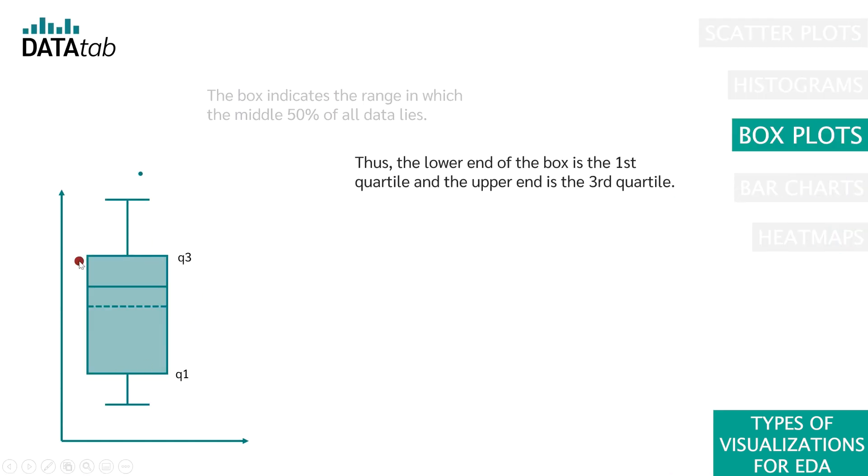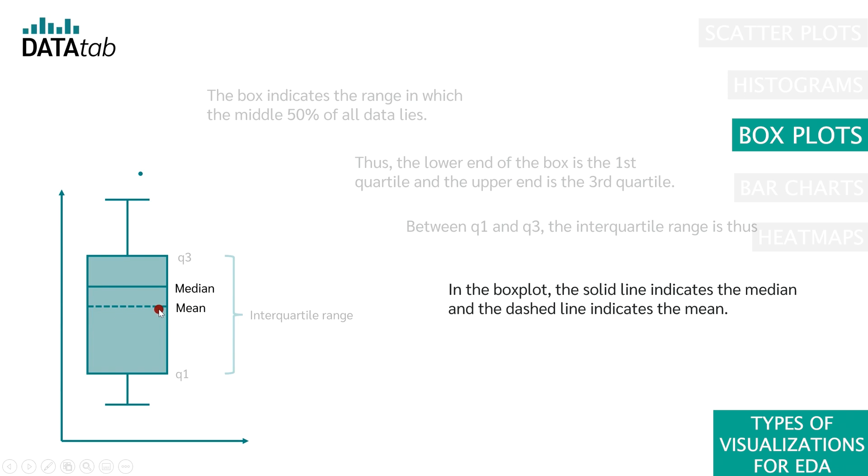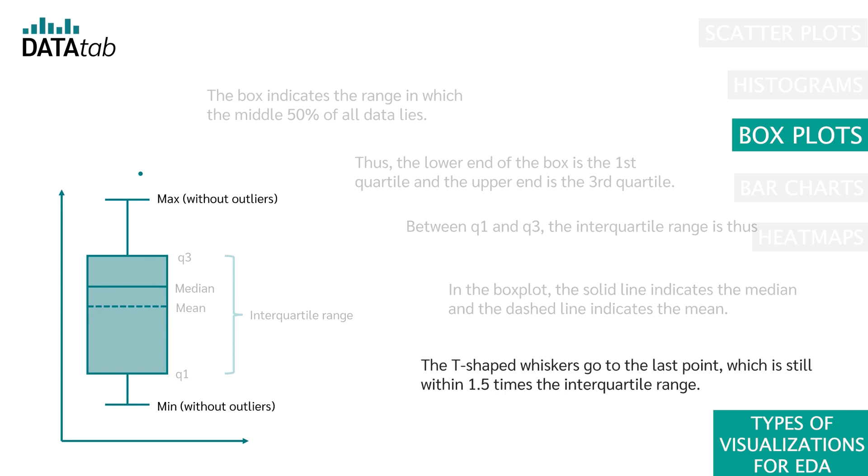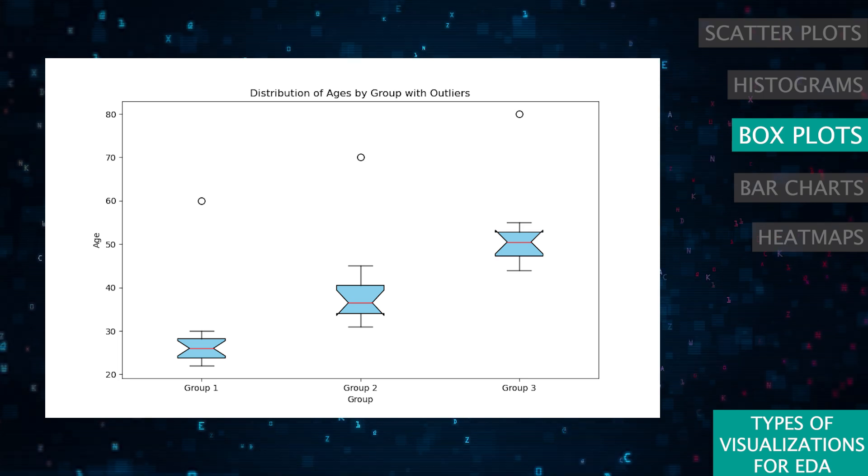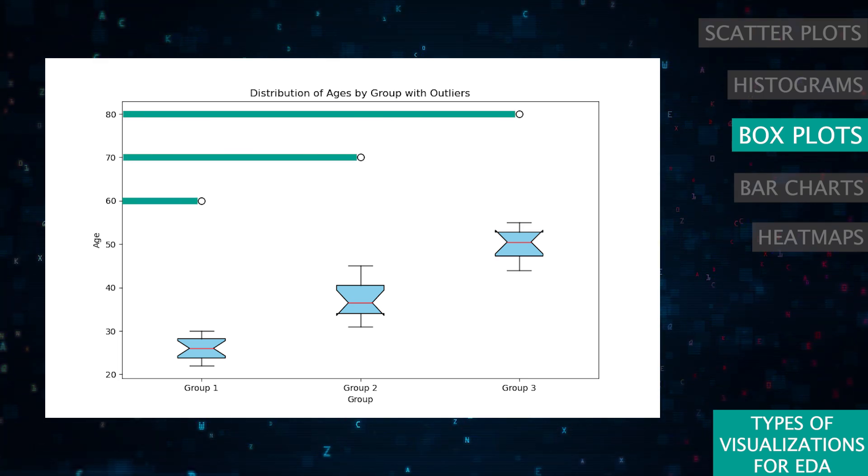Box plots, or box and whisker plots, are great for summarizing the distribution of a data set and identifying outliers. They display the median, quartiles, and potential outliers in your data. They are especially useful when comparing the distributions of multiple groups side by side, unlike histograms. We can see from the example that each group has an outlier. They are at the age of 60, 70, and 80 respectively.